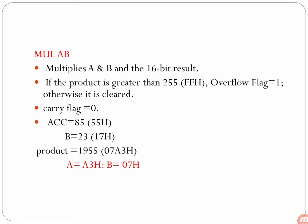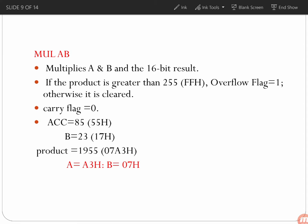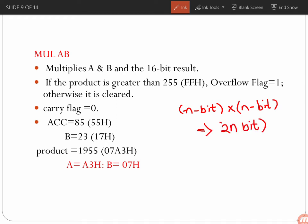Let us get started with the MUL AB instruction. MUL AB multiplies the contents of the accumulator and the register B. When you take any n-bit number multiplied with another n-bit number, the product will be at most 2n bits. So with A being 8-bit and B being 8-bit, an 8-bit number multiplied with an 8-bit number gives a result that may be maximum 16 bits.